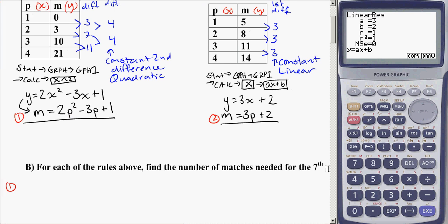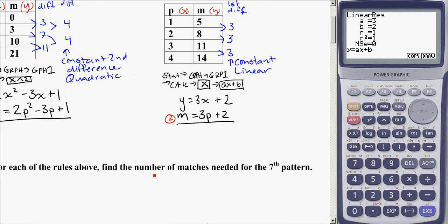And if I read my question, find the number of matches, so matches is what I'm looking for, when p is equal to seven. And that, in your calculator, is the same thing as x is equal to seven. So keep that in the back of our head, and this would be y is equal to something that we don't know.